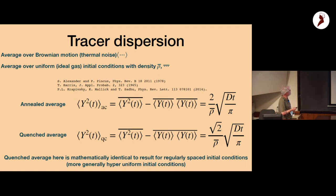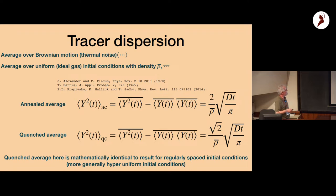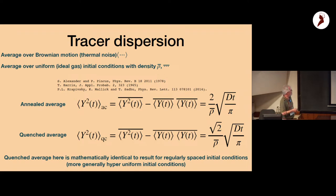There are two types of disorder in this problem: thermal noise — each particle is subject to Langevin noise from Brownian motion — and the initial conditions, which determine how particles are organized. One of the first solutions to this problem was by Alexander and Pincus, and it was also studied earlier in the probability literature by Harris. Recently people have been applying macroscopic fluctuation theory.